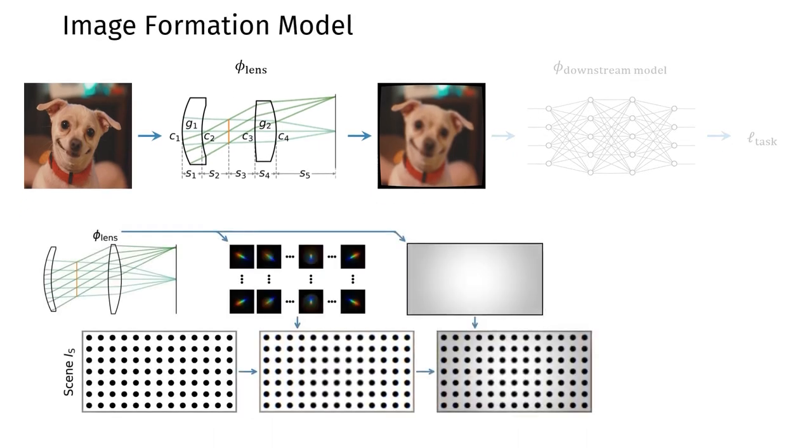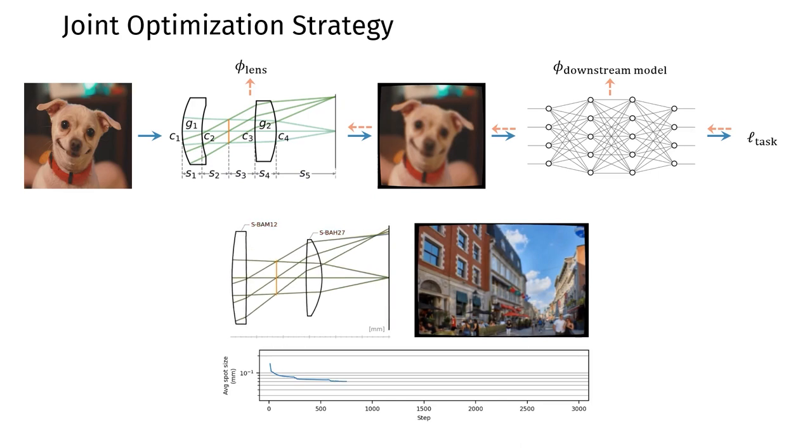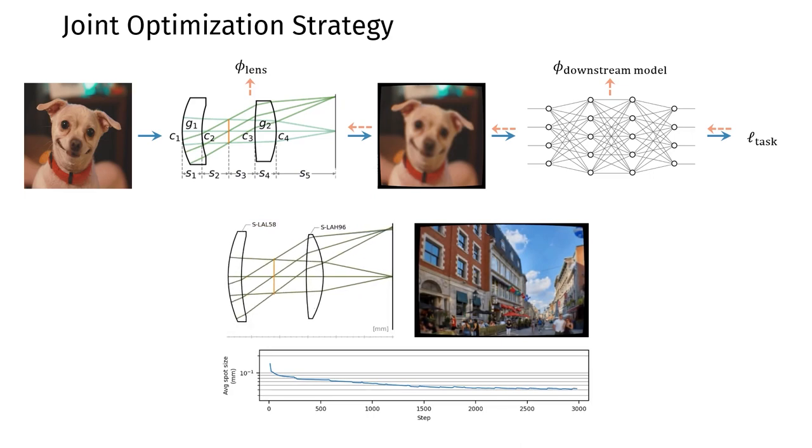In this work, we first introduce an accurate image formation model for conventional refractive lenses. Then, we devise a joint optimization strategy to optimize all lens variables, including glass materials, without harming stability or manufacturability.